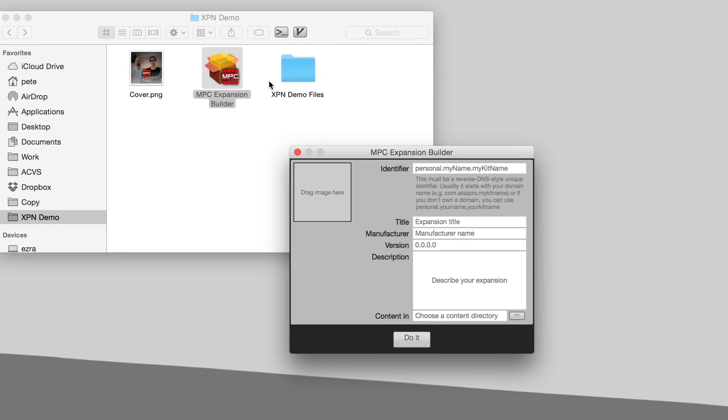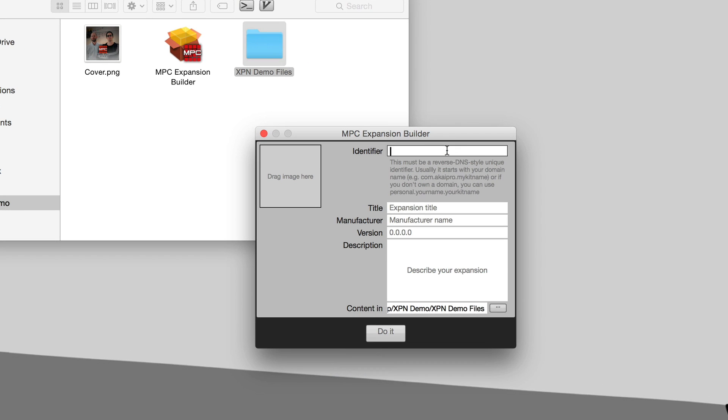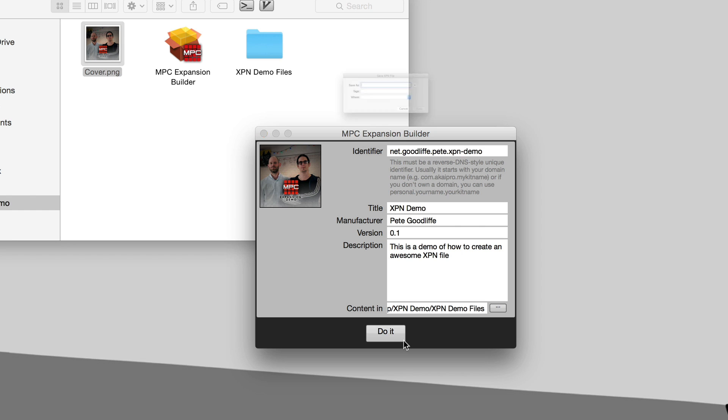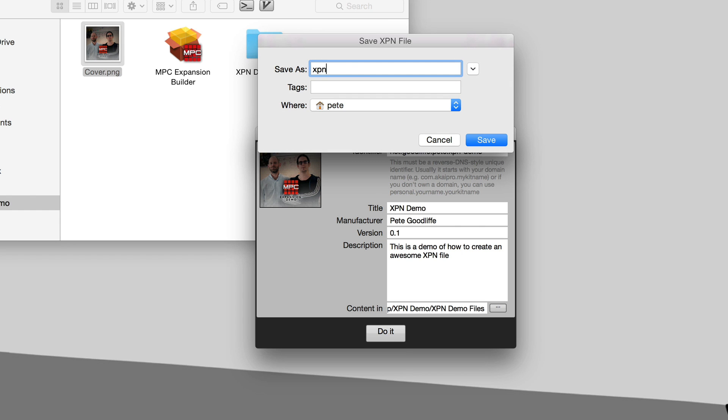1.7.2 ships with a new app called the MPC Expansion Builder. Simply drag in a directory and enter the details of your pack: the title, your name, some cool cover art that the world can adore, a version number, and some info about your new creation. Then hit do it.